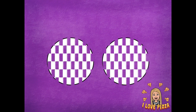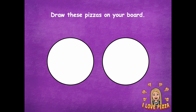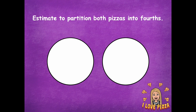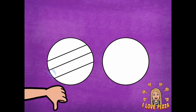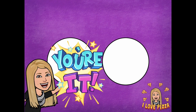We're going to do a problem with pizza. So you're going to draw these two pizzas on your board — just draw two circles, and notice how mine are the same size. They need to be the same size to be able to compare. Then you're going to estimate to partition both pizzas into fourths. Remember, the parts have to be equal to count as a partition for our fraction. Pause the video, draw both circles, split them into fourths, and then click play when you're ready for the next step.